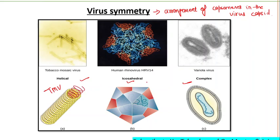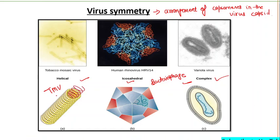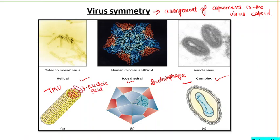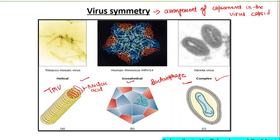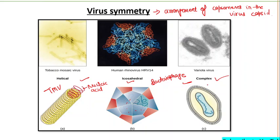TMV is an example of helical symmetry. Bacteriophages show icosahedral or complex symmetry. In helical symmetry, capsomeres are wrapped around the nucleic acid. In icosahedral morphology, nucleocapsids are arranged in a polyhedron having equilateral triangular faces with about 12 vertices. Complex structure viruses are neither purely icosahedral nor helical — T4 virus of E. coli is an example.